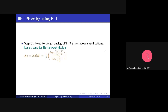Our present target is to design the analog low pass filter with these specifications. Let us consider Butterworth filter design. In that case we need to find the order of the filter and the 3dB cutoff frequency. Once we find those two things we can find H(s) straightaway. The order of the Butterworth filter is n = ceil(n), derived from this expression.